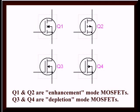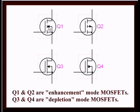Here we have four schematic symbols for power MOSFETs. There are really two broad categories. Q1 and Q2 are enhancement mode MOSFETs. Q3 and Q4 are depletion mode MOSFETs. Notice in Q1 and Q2, which are enhancement mode, there is a broken line. The arrows simply specify whether it's an N channel or a P channel — the arrow points to the N type material. Moving down, you notice the bar is solid — those are depletion mode transistors.